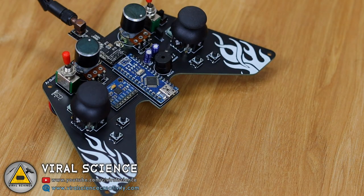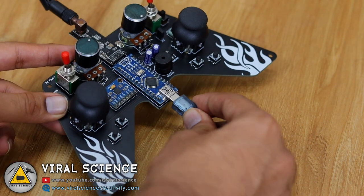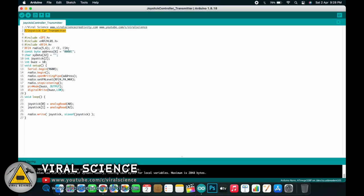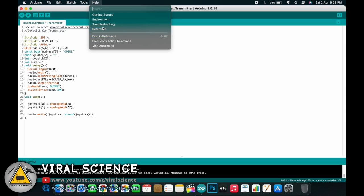So first we'll upload the code for our joystick transmitter. So connect the Arduino board with your computer. And here is the code for it. You need to get this library NRF24L01.h. And here is the pin for CE and CSN which I've defined 5 and 6. And here is the analog pin numbers from which we will be sending the data of our joystick to Arduino board.